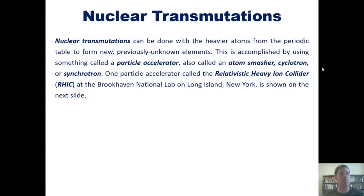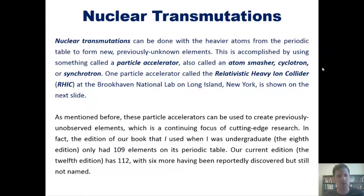Nuclear transmutations can be done with heavier atoms from the periodic table to form new previously unknown elements. This is accomplished by using something called a particle accelerator, also called an atom smasher, cyclotron, or synchrotron.